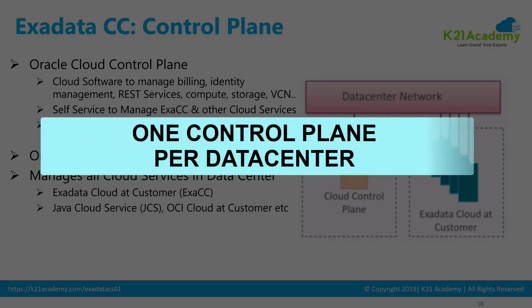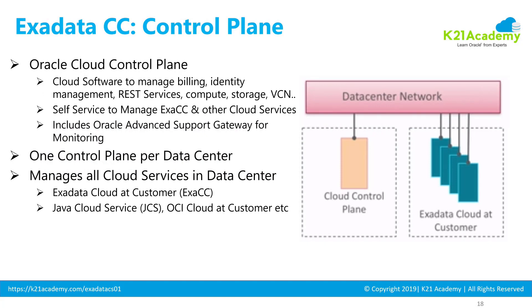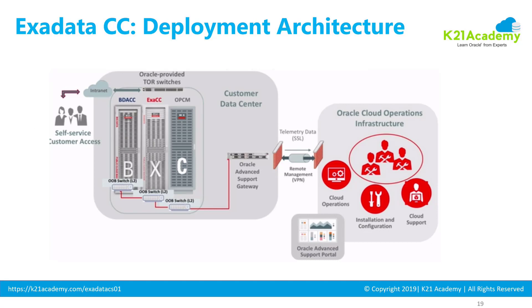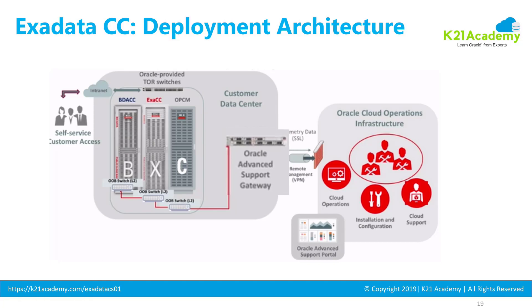You only need one control plane per data center. So if you have two data centers — one primary and one standby — with multiple Exadata Cloud Service deployments within one data center, you still only need one control plane per data center. Along with this control plane, you also get the Oracle Advanced Support Gateway, which sends all monitoring data to Oracle's cloud operations team.